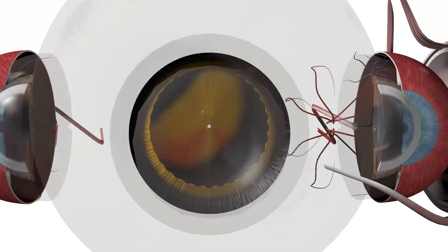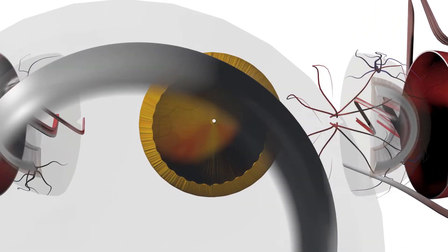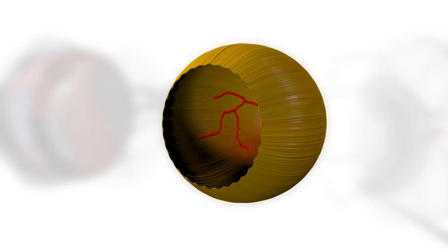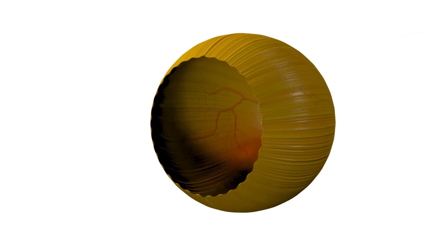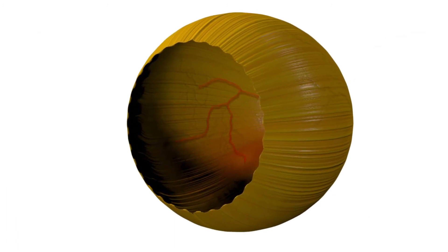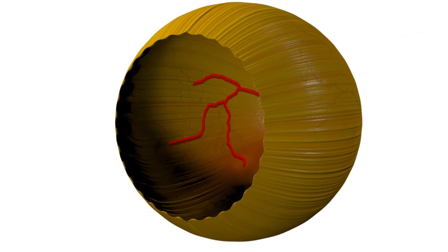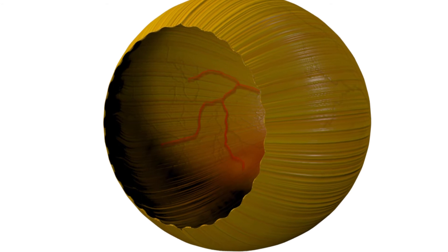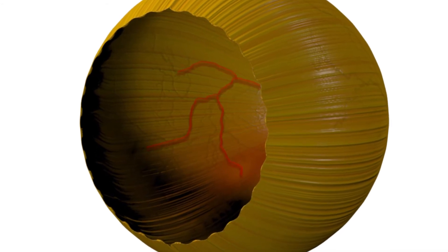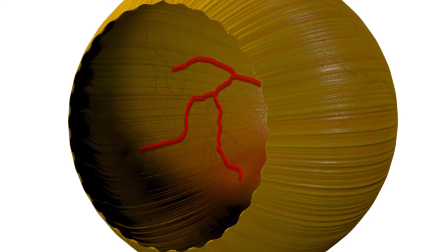Retina: the neural tissue lining the vitreous cavity posteriorly. Essentially transparent except for the blood vessels on its inner surface, the retina sends the initial visual signals to the brain via the optic nerve.